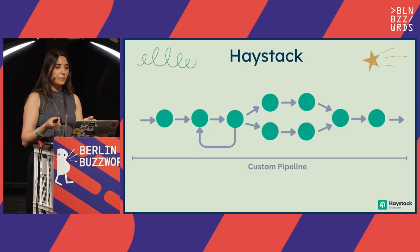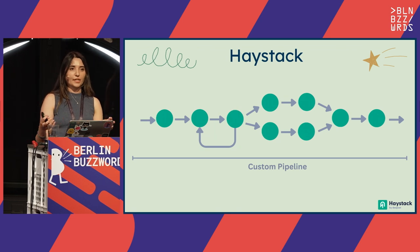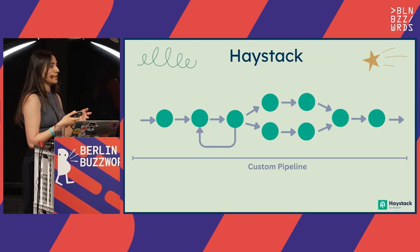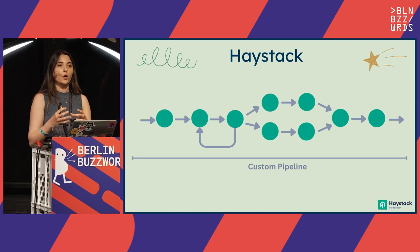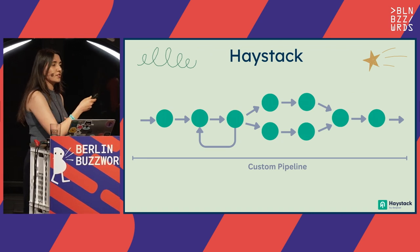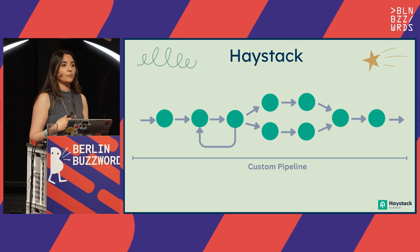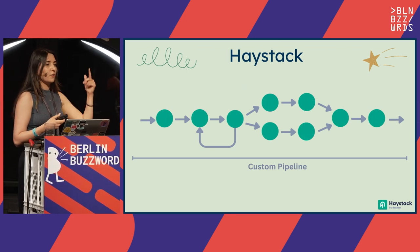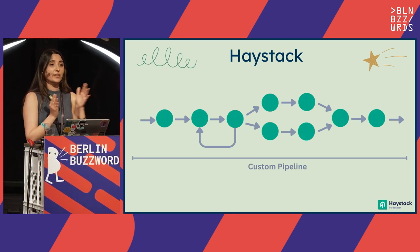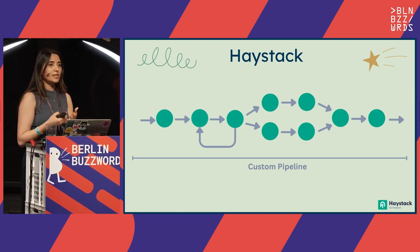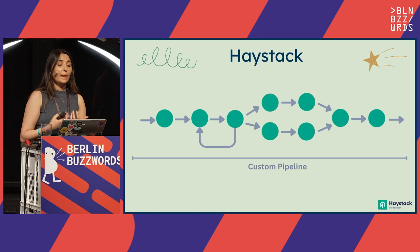Haystack has two main building blocks: components and pipelines. Components are smaller units — they only have one job to do. By connecting these components to each other, you can form your pipelines. These pipelines don't have to be linear; they are directed graphs. You can think of components as nodes in a directed graph, connect the edges, and form your pipeline. Since they are directed graphs, they can have loops or branches, and you can merge those branches based on your use case.